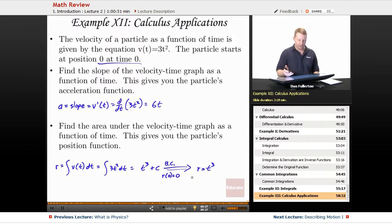So we were able to come up with the particle's position function based on its velocity. We took the derivative in one direction to find the acceleration. We took the integral going the other way in order to find its change in position.